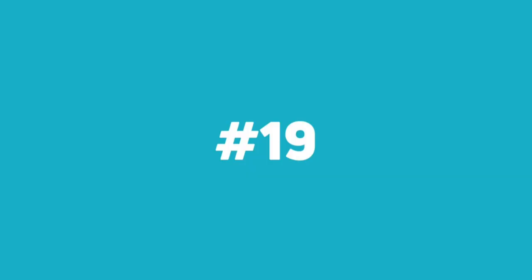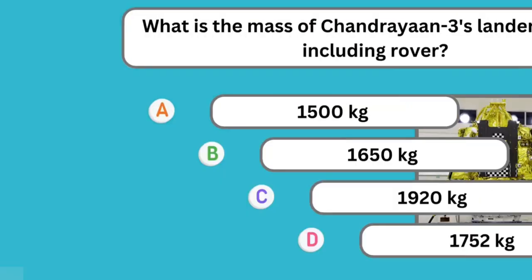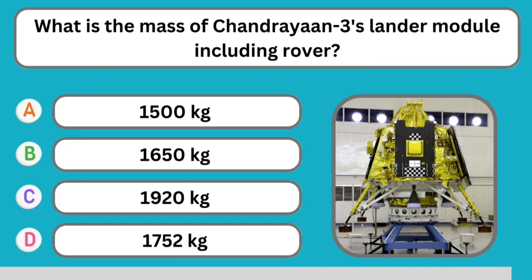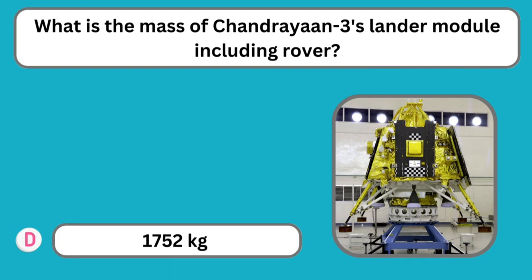Question number nineteen: What is the mass of Chandrayaan 3's lander module including the rover? The correct answer is 1752 kg.